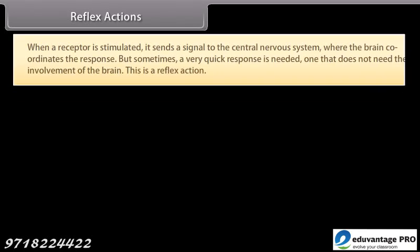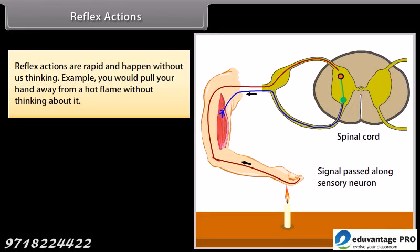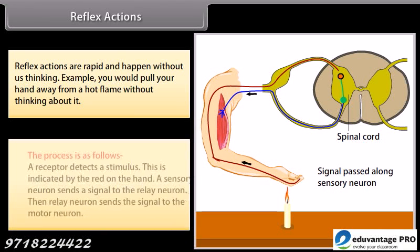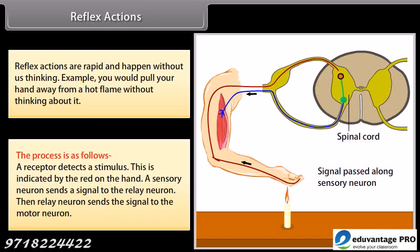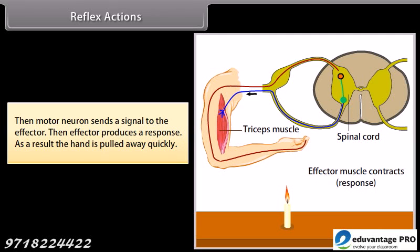When a receptor is stimulated, it sends a signal to the central nervous system, where the brain coordinates the response. But sometimes a very quick response is needed — one that does not need the involvement of the brain; this is a reflex action. Reflex actions are rapid and happen without us thinking. For example, you pull your hand away from a hot flame without thinking. A receptor detects the stimulus, a sensory neuron sends a signal to the relay neuron, which sends it to the motor neuron, which sends a signal to the effector, producing a response — the hand is pulled away quickly.